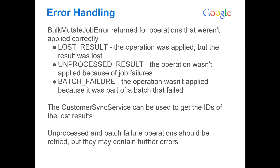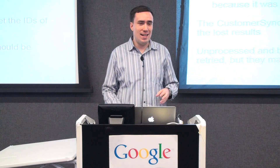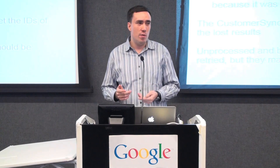There are some other errors that are caused by bulk mutated job processing itself. 'Lost result' is the case where we know we applied that operation but something went wrong and we don't know what the result was. Then there's 'unprocessed result', which means that due to some other failure in the job, we never even got to this operation — we didn't even try to apply it. And then there's 'batch failure'. What that means is: you've passed in a few thousand operations, we're going to split that up into batches. If the type of operation in that batch doesn't support partial failure, then that whole batch will fail. You'll get a real error for the operation that actually had the error, and then you'll get this batch failure error for every other operation in that batch that in itself was okay — it didn't return an error on its own, but it also didn't get applied.